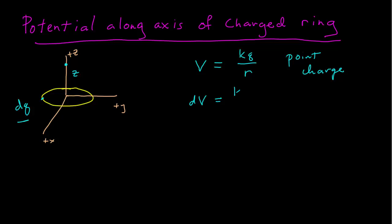And so that potential then, I can use my point charge formula because this amount of charge is at essentially a point. So the amount of charge is dQ, and it's some distance away, distance R.